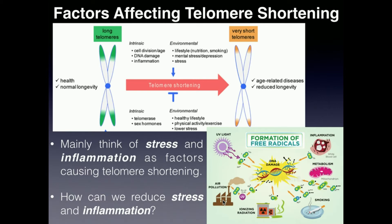Ionizing radiation and smoking are also major factors. Smoking is part of why people who smoke often look older — it's partly because smoking damages the DNA and shortens the telomeres, causing that aging appearance. Byproducts of metabolism such as free radicals and reactive oxidative species also contribute, which underscores why you need antioxidants in your diet. Generally, inflammation of any kind produces free radicals, and without enough anti-inflammatory agents such as omega-3s, you will have excess inflammation leading to telomere shortening.